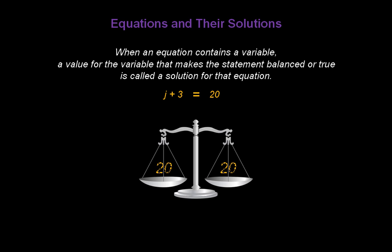Both sides of this equation have to total 20. So we know j has to be 17, because 17 plus 3 gives us 20.